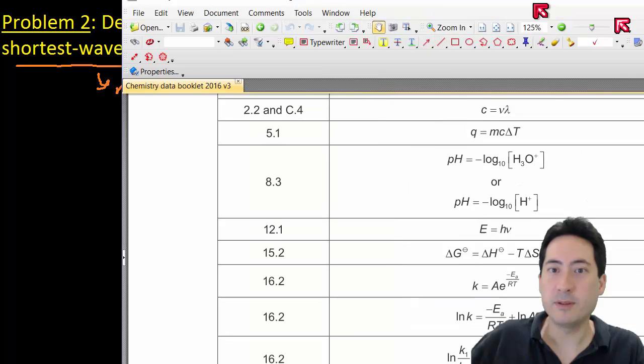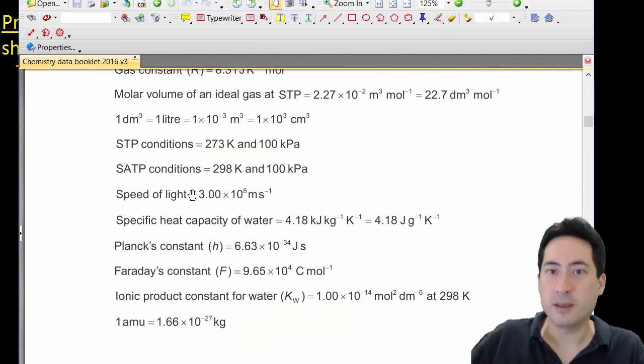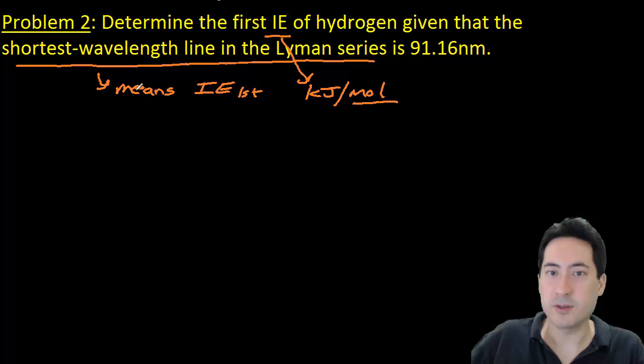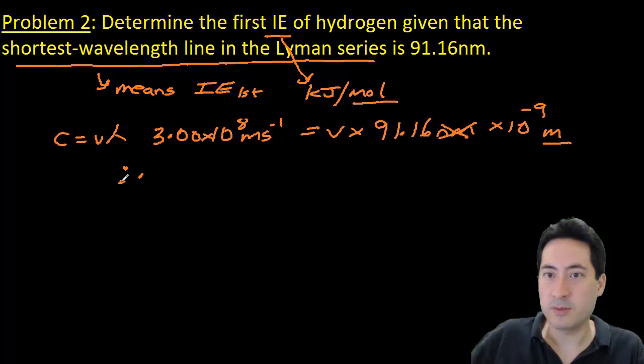And so what do we have? We need the ionization energy, so we're going to have to convert it to moles. If you've forgotten what moles is, that's also in the data booklet. So I'm getting all the constants and the equations from the data booklet. And so I sub that in, and I get the frequency as 3.29 by 10 to the 15 per second.